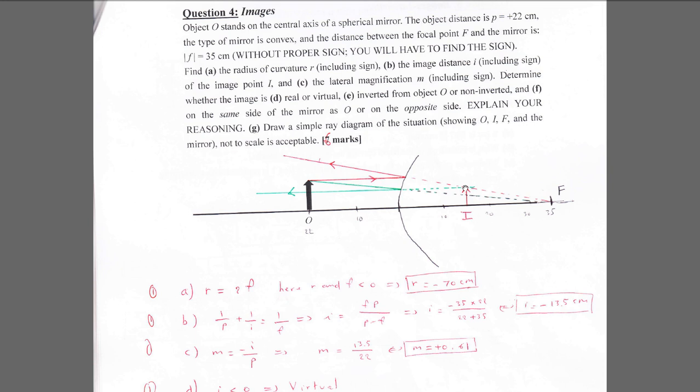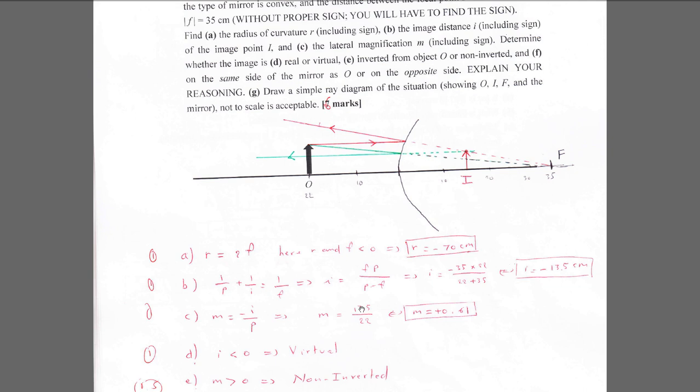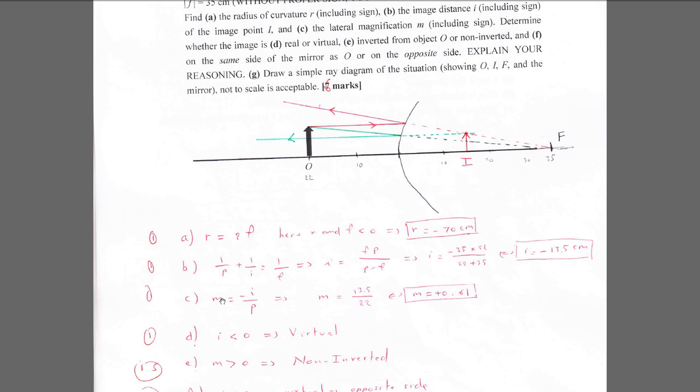For part D, the image is virtual because it intersects virtual rays. You can also verify with numbers: i is negative, therefore it is a virtual image. For part E, from the drawing the image is non-inverted, which is confirmed by the formula since m is positive.